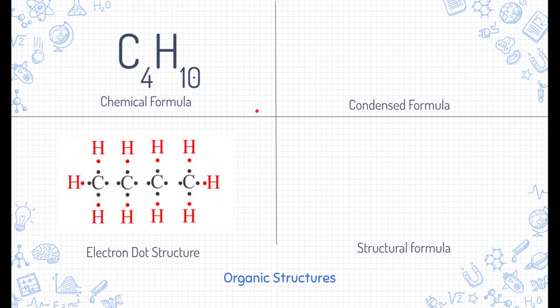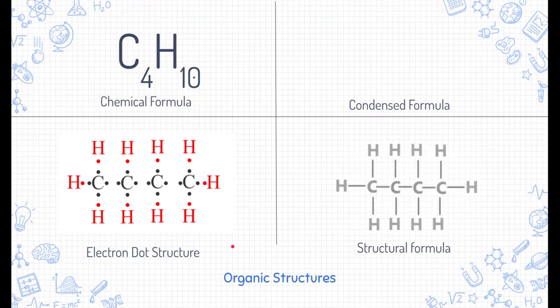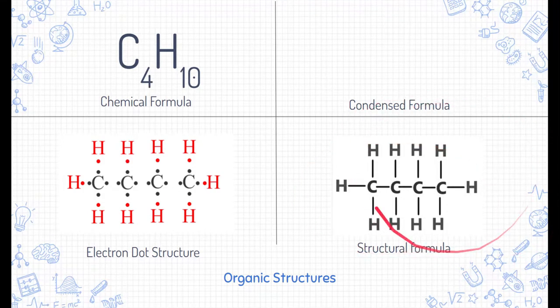We can represent butane using the electron dot structure as you see in the lower left-hand corner. This shows all the valence electrons and how these valence electrons are interacting with various elements to create bonds. Chemists like to simplify those bonds. This is a structural formula over on the right-hand side. Instead of drawing all the dots, we can simplify two electron bonds with these single bonds or single lines represented here in the structural formula of butane on the lower right.